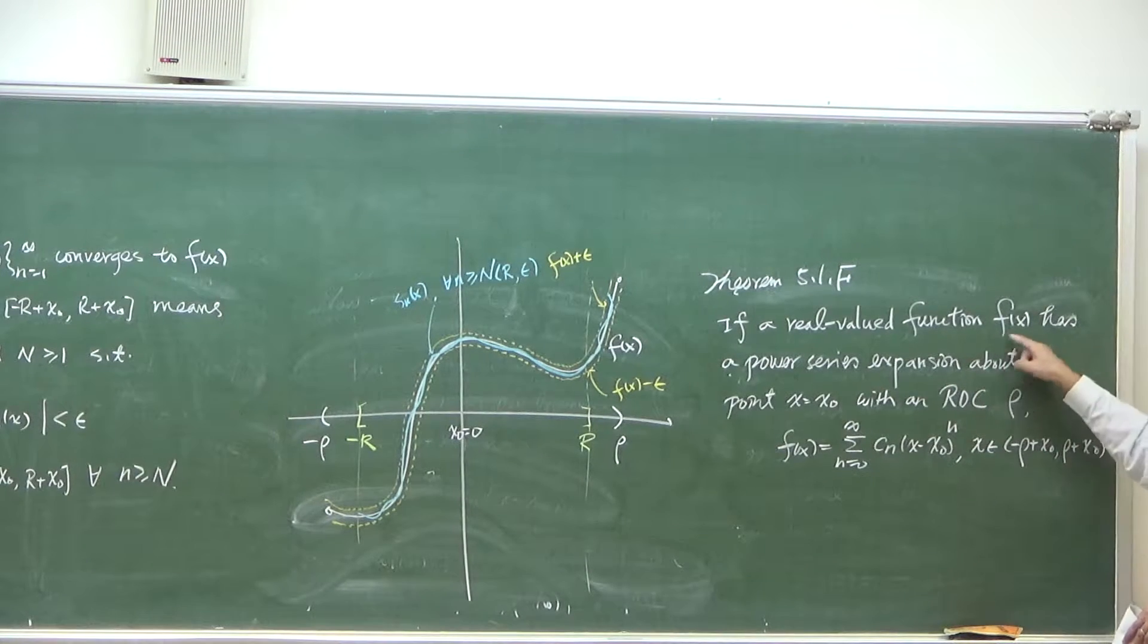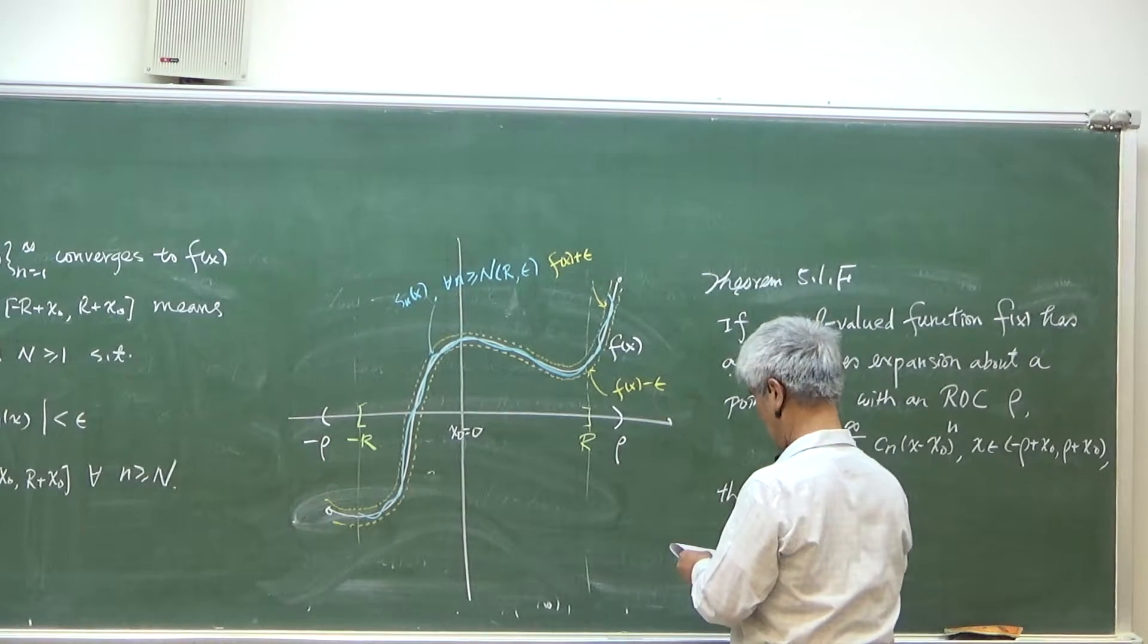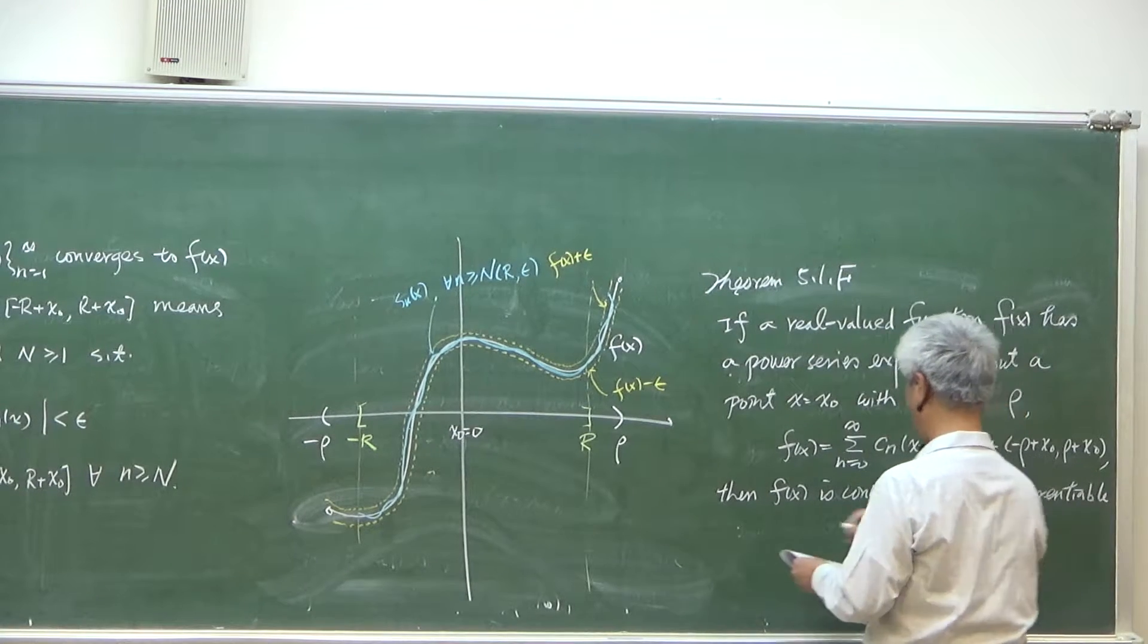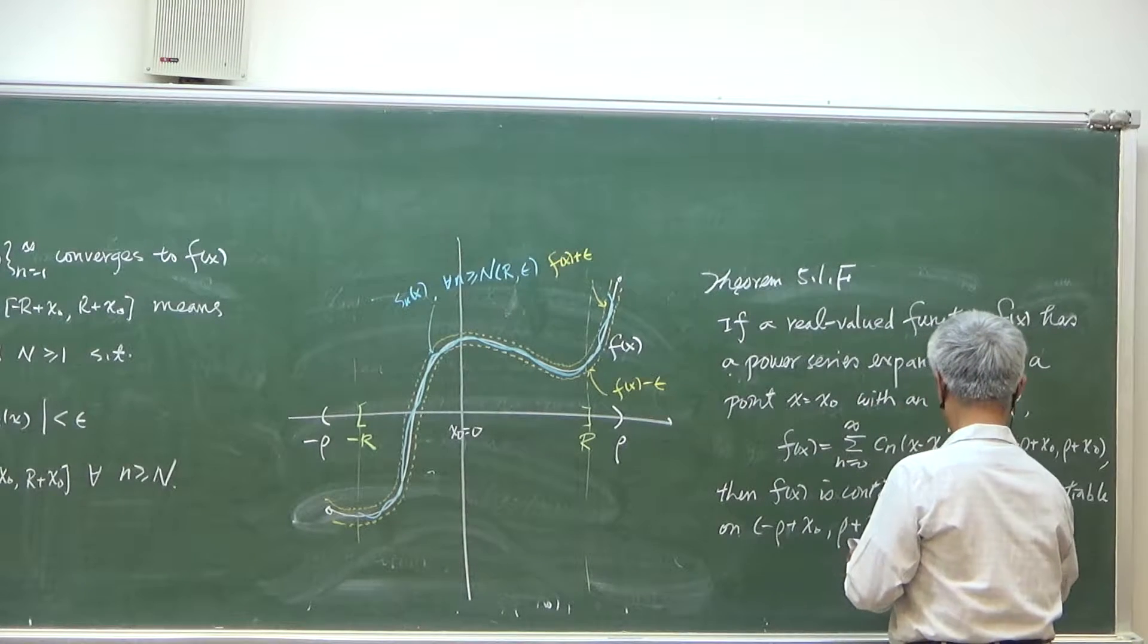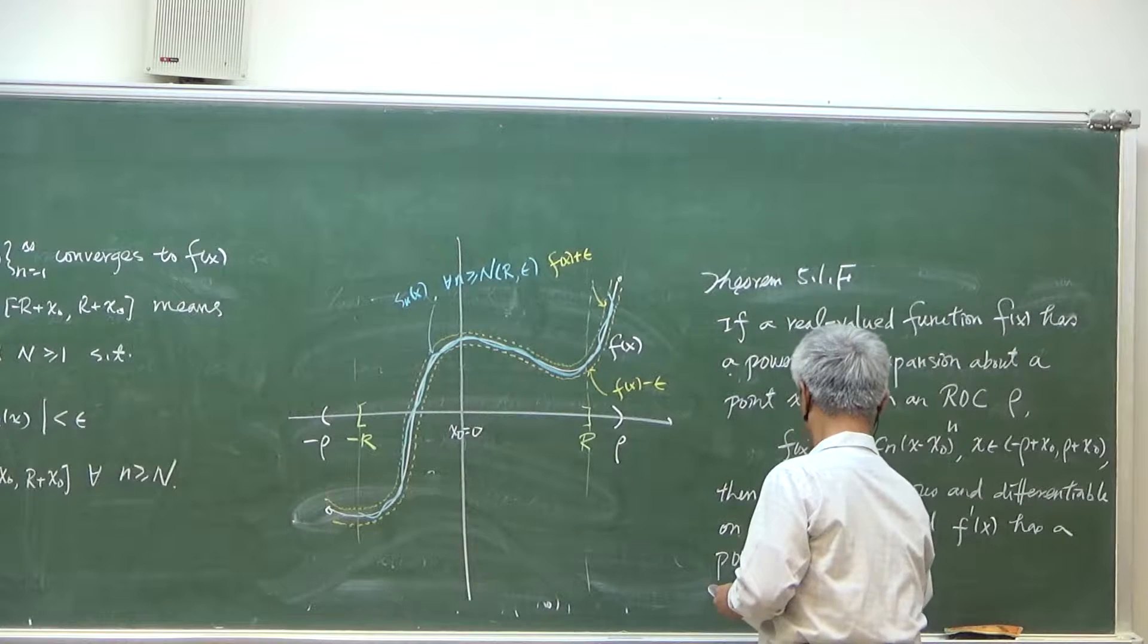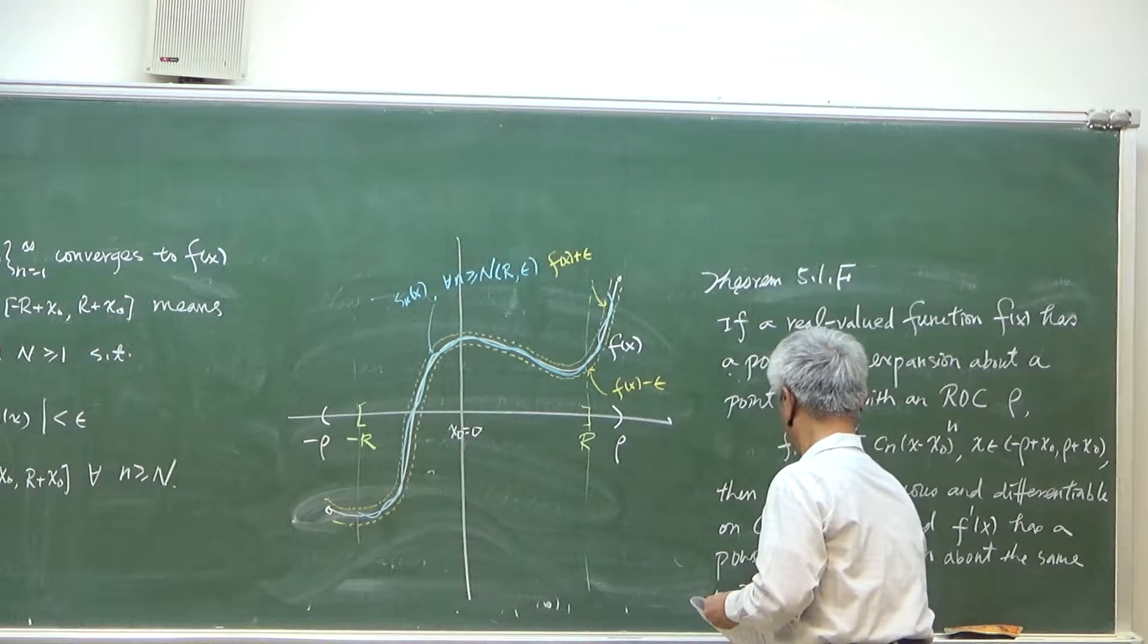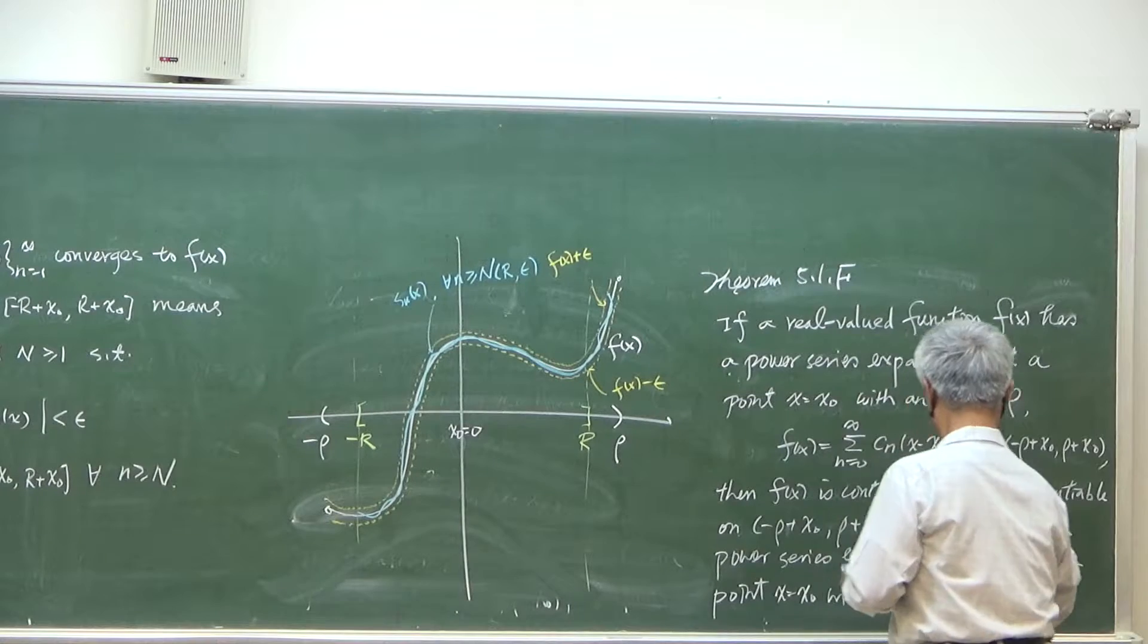So if we know that, we know that f of x can be expanded by this power series. Then f of x is continuous and differentiable on the open interval. And f prime of x, the derivative has a power series extension about the same point x equal to x0 with the same ROC rho.